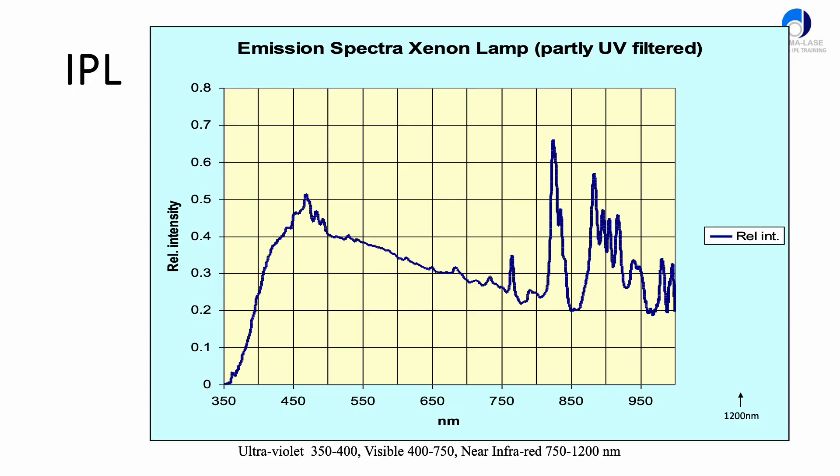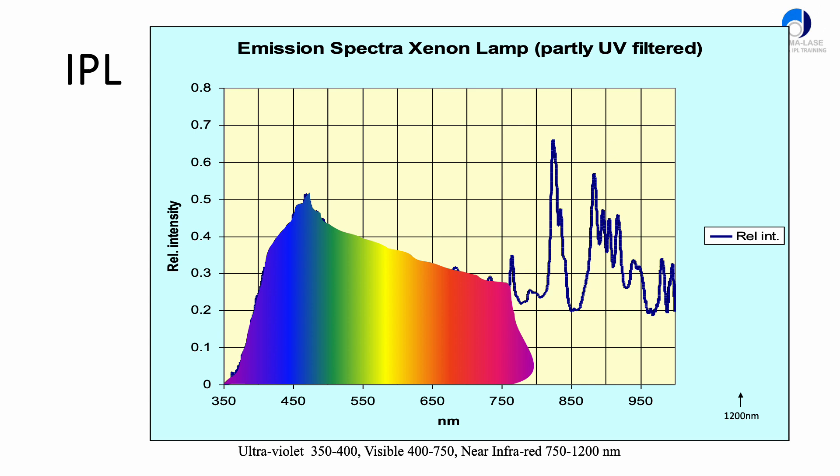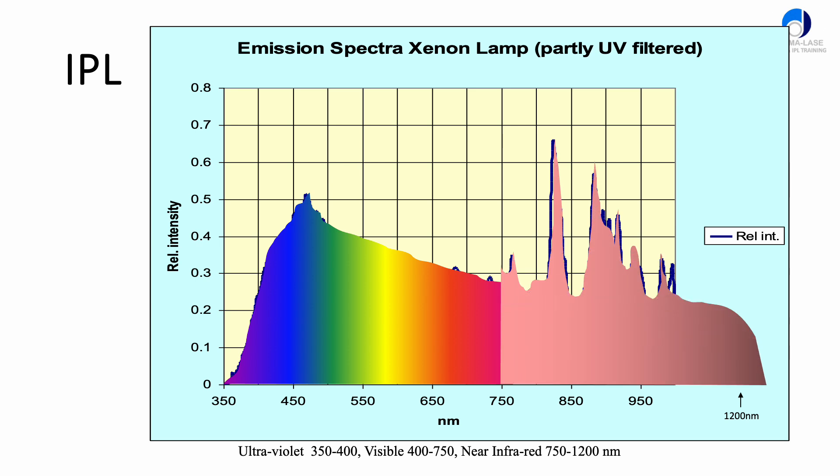If we look at the emission spectrum from an IPL system, this is the output from a Xenon lamp which is typically used in modern day IPL systems. We can see there's a lot of energy in the visible part of the spectrum from about 350 to about 750 nanometers, and then there's a big chunk of energy in the infrared part of the spectrum which is invisible to us and we tend to feel as heat energy. You can see there's a broad range of wavelengths here for a typical IPL device.